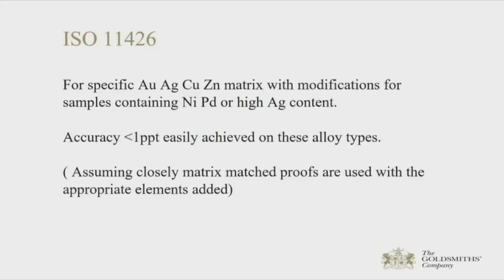The basis of fire assay is the removal of base metals by an oxidation process. If any PGMs are present, they do not oxidise at the higher temperatures and are also resistant to nitric acid in the parting process. Even small amounts can compromise the accuracy of the true gold content, and they are retained to some extent in the final gold cornet, meaning the final calculated gold figure could be biased on the high side.